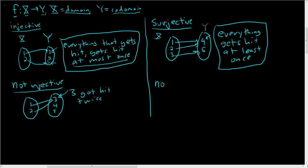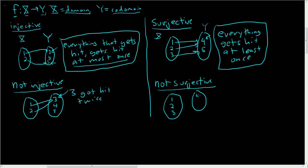Here's an example of not surjective. Not surjective would look something like this: here's 1, 2, 3, and here's 4, 5. Let's just send everything to 4. So what didn't get hit? 5 didn't get hit, so it's not surjective. This is definitely not injective either because 4 got hit not once, not twice, but thrice.